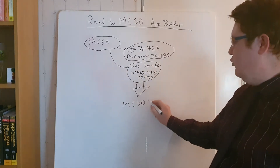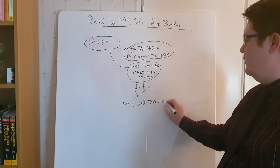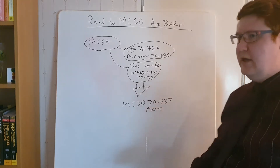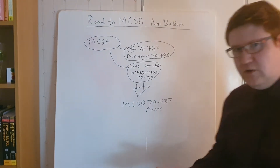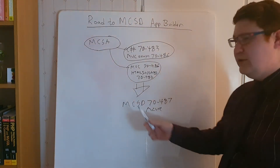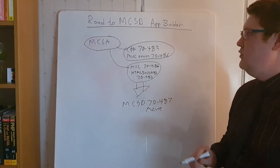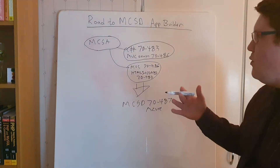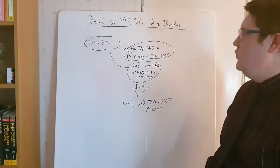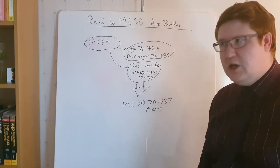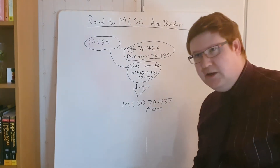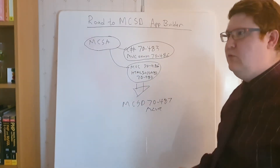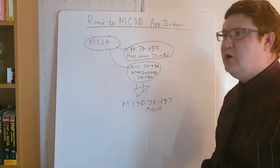To get the MCSD, you then have to pass exam 70-487, which is an Azure exam. That is the road to get there. You will have to make an estimation about how much time you need to invest — for me it took approximately 120 hours to cram for those exams.